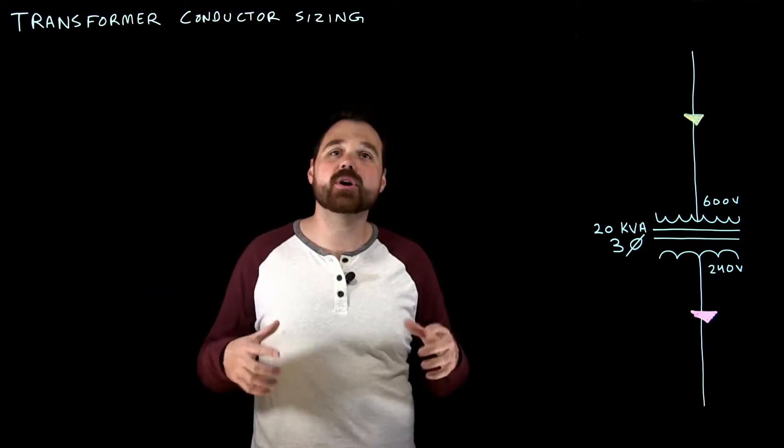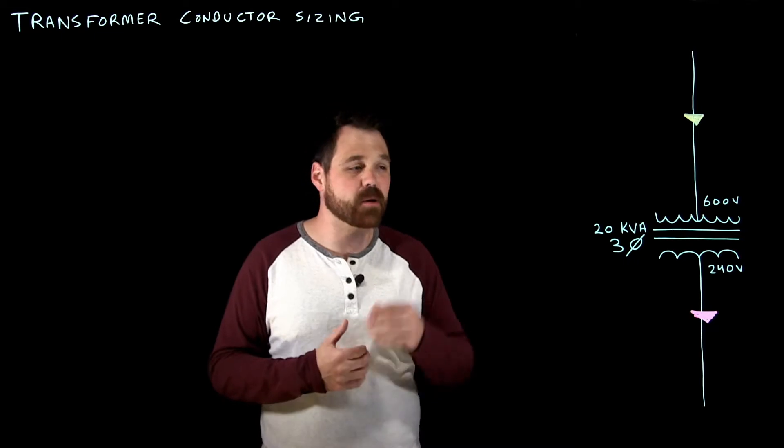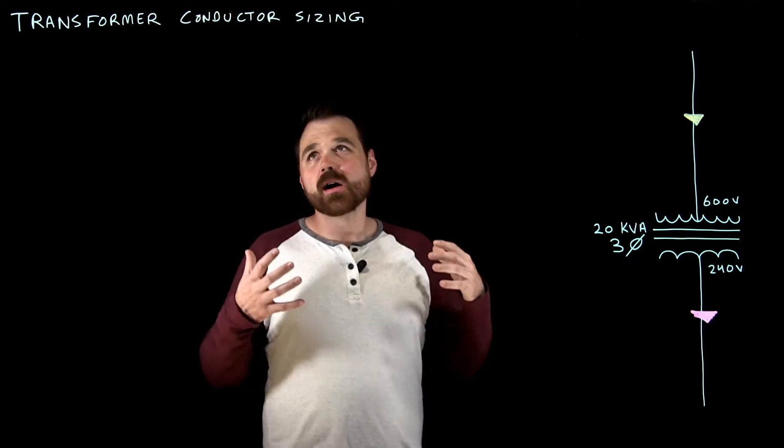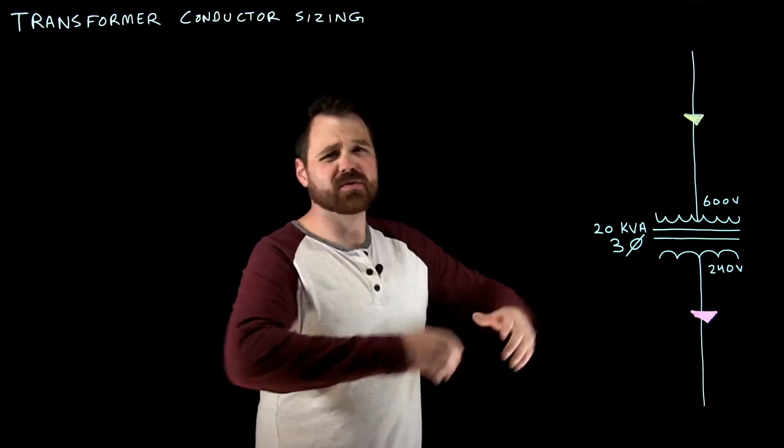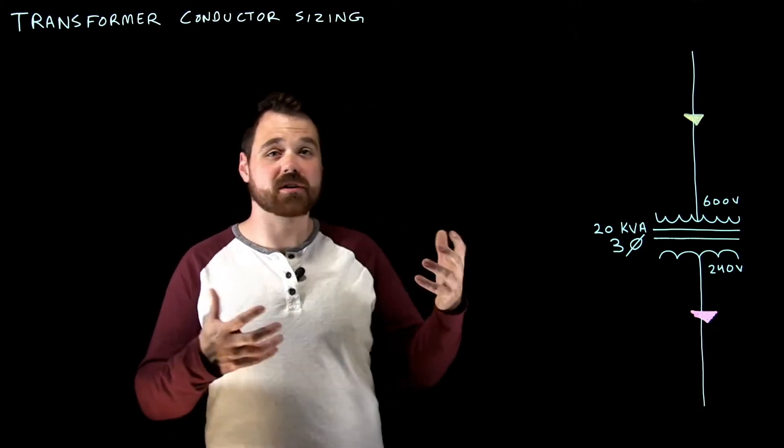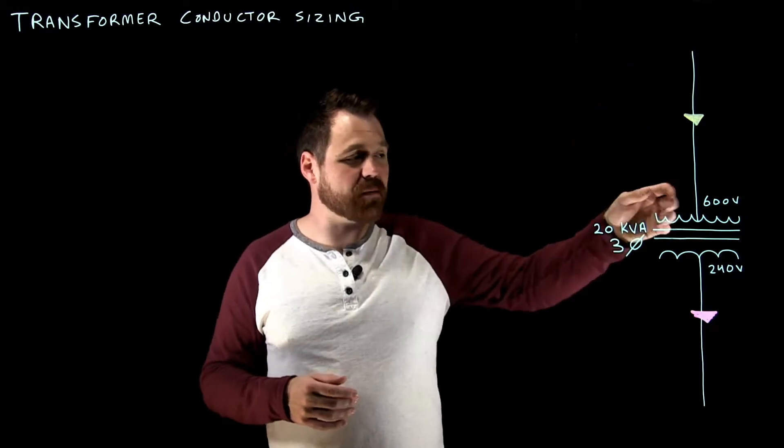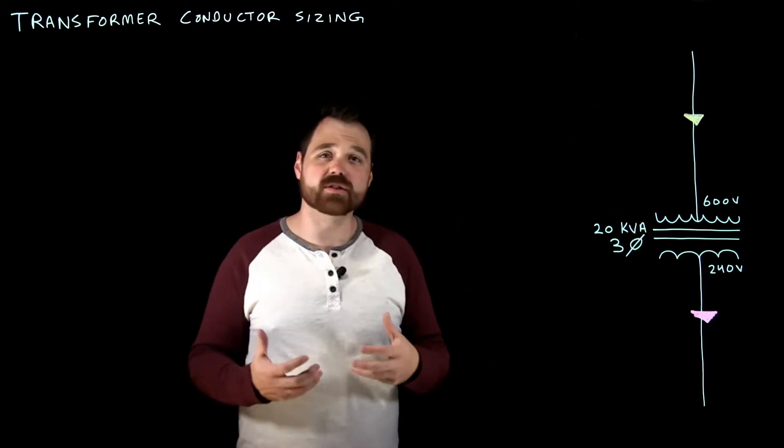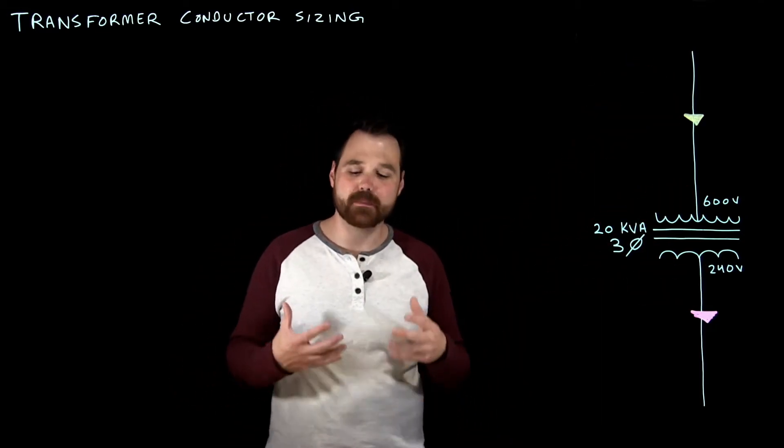And you can reference down below all of the code rules that I'm talking about today. So as an electrician, we install the transformer, we mount it up on our ready rod, and now we need to size the conductors or ensure that the conductors are sized correctly for the primary and the secondary of our transformer so that we're not going to have any problems.